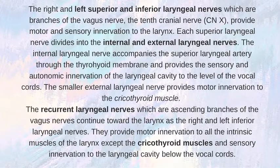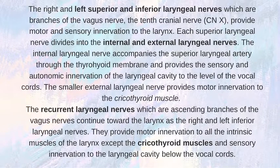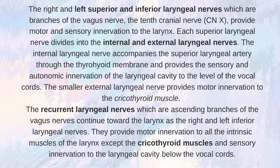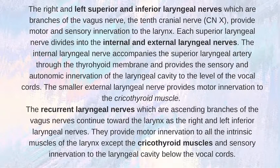Innervation: the right and left superior and inferior laryngeal nerves, which are branches of the vagus nerve — the tenth cranial nerve — provide motor and sensory innervation of the larynx. Each superior laryngeal nerve divides into the internal and external laryngeal nerves; the internal laryngeal nerve accompanies the superior laryngeal artery to the thyrohyoid membrane and provides the sensory and autonomic innervation of the laryngeal cavity to the level of the vocal cords, while the smaller external laryngeal nerve provides motor innervation to the cricothyroid muscle. The recurrent laryngeal nerves, which are ascending branches of the vagus nerve, continue towards the larynx as the right and left inferior laryngeal nerves, providing motor innervation to all intrinsic muscles of the larynx except the cricothyroid muscles, and sensory innervation to the laryngeal cavity below the vocal cords.